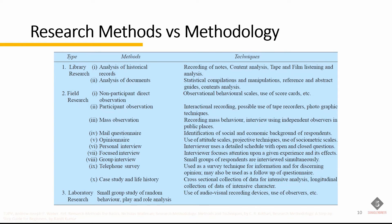Here we have three columns: the type, the methods, and the techniques. In library research, we have two methods. We can analyze the historical records or analyze other documents. In historical records, there are many techniques: we can record notes, content analysis, tape, film, listening, and analysis. While in analysis of documents, we have statistical compilations, manipulations, reference, and so on. The actual difference is that techniques are a more specific way of doing something.